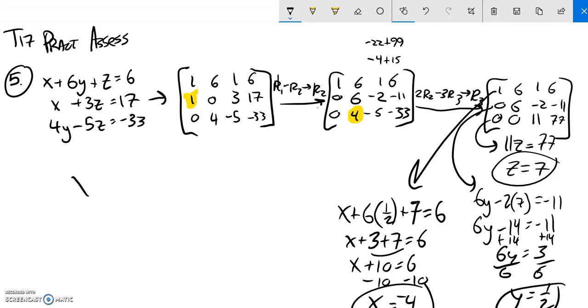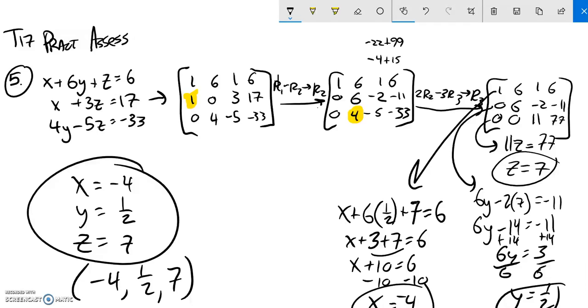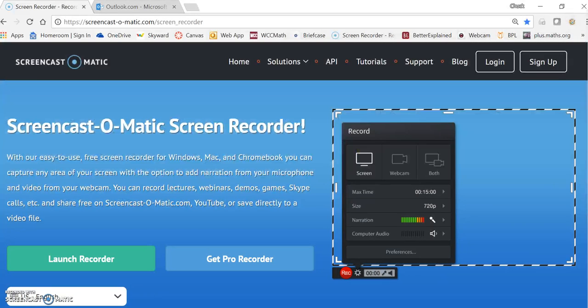So I can write my solution this way. Just write it out. Write what X is. Write what Y is. Write what Z is. Or I can write it as the ordered triplet. X, Y, Z. Either of these solutions are a fine way to show it. Thank you.